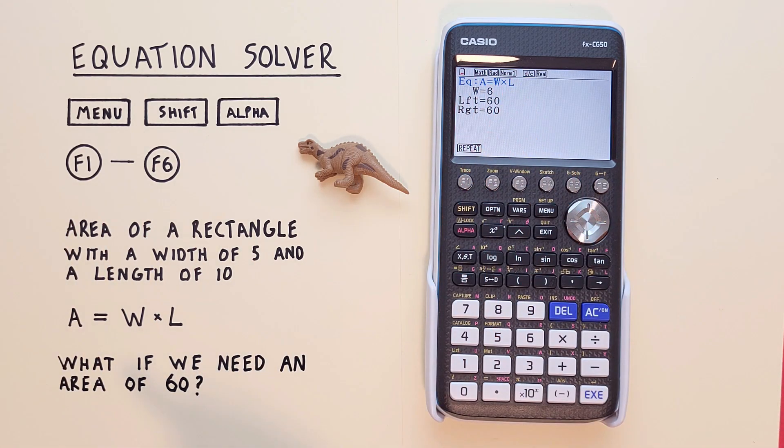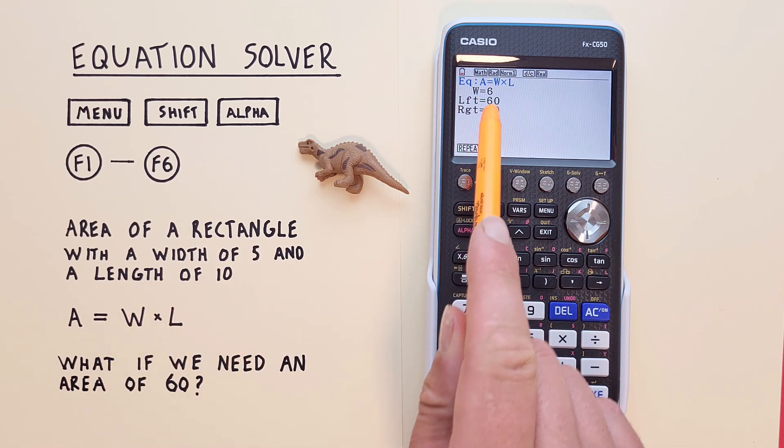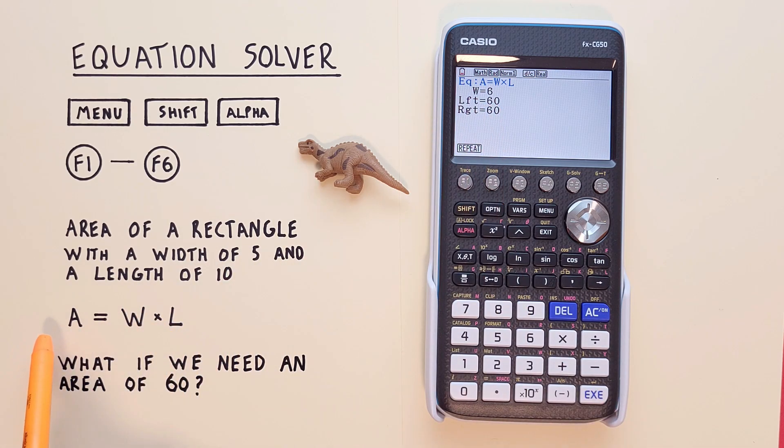And we see that gives us a width of 6, which makes sense, because if we held our length of 10, we know 6 times 10 would give us an area of 60.